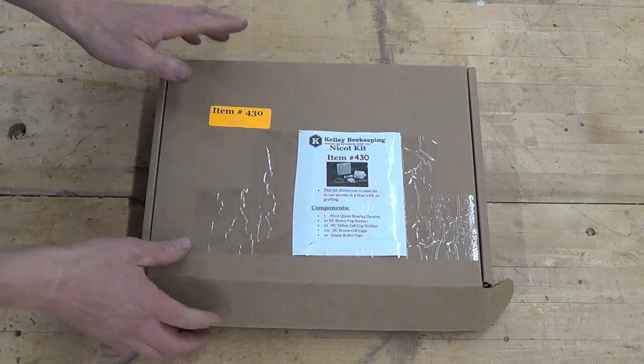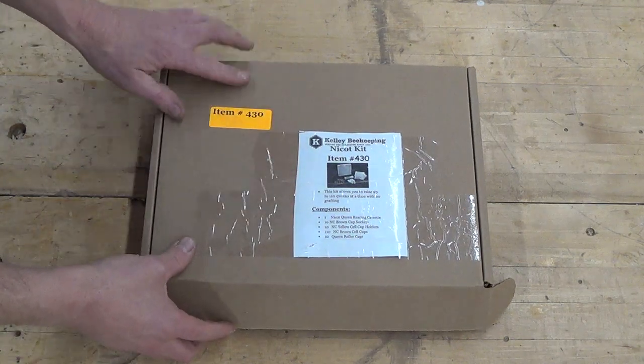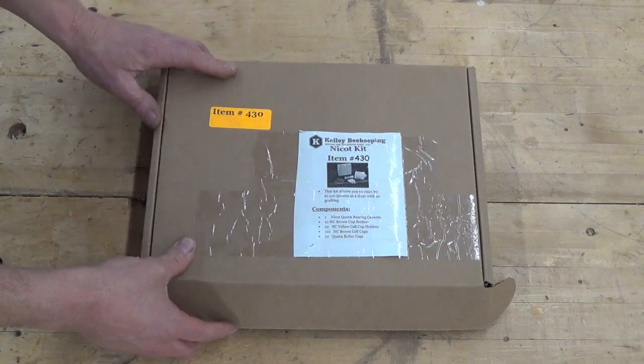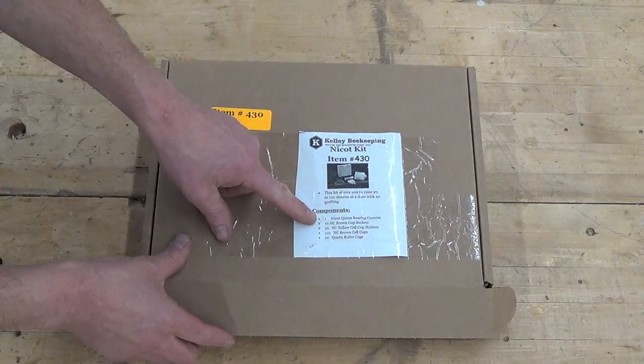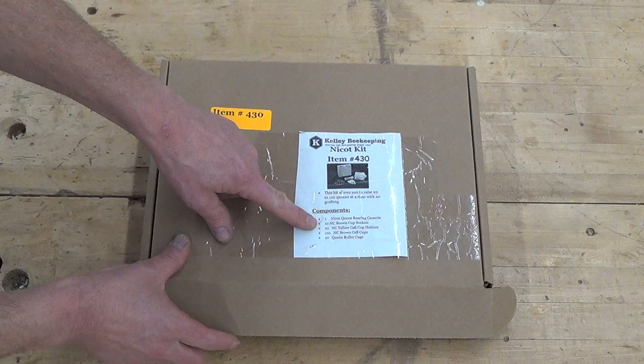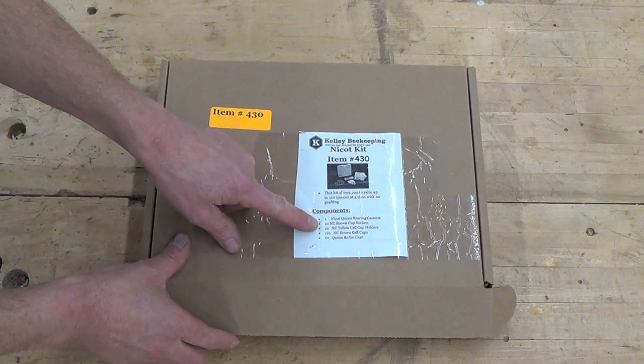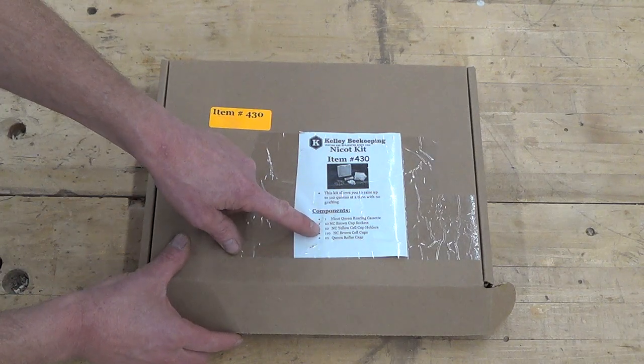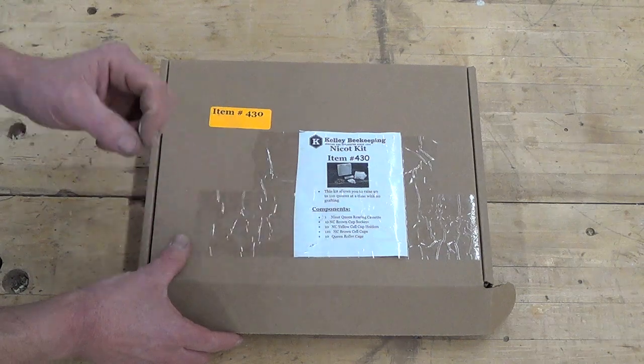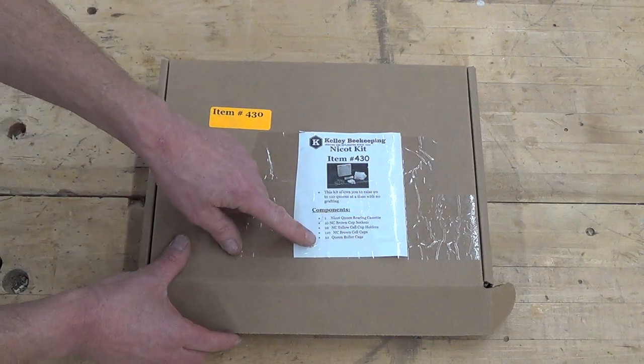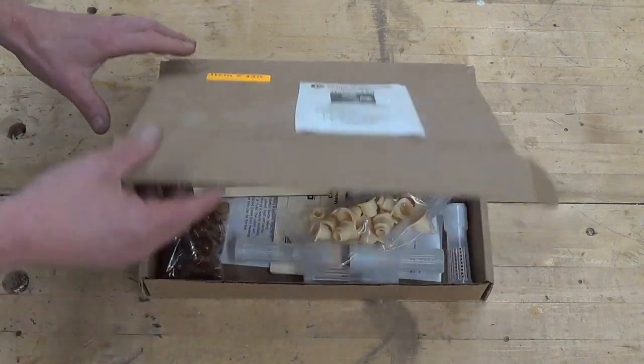Okay, so this is how our kit shows up. I ordered mine from Kelly Beekeeping. It comes with the cassette and 10 of the brown sockets, 10 of the yellow sockets, 110 of the little cups, and then 10 queen roller cages.